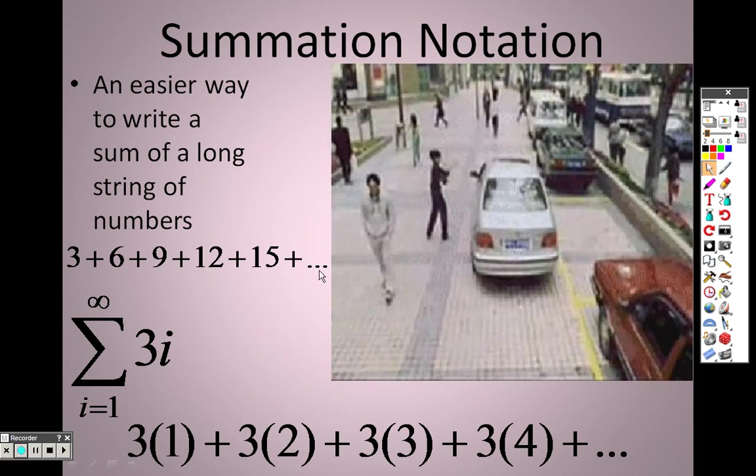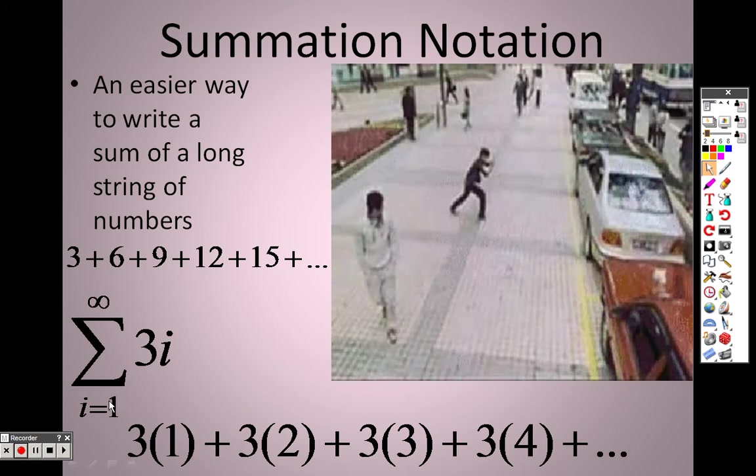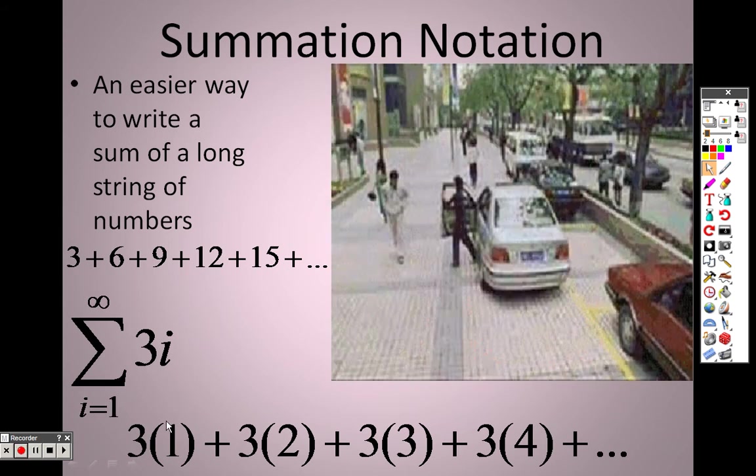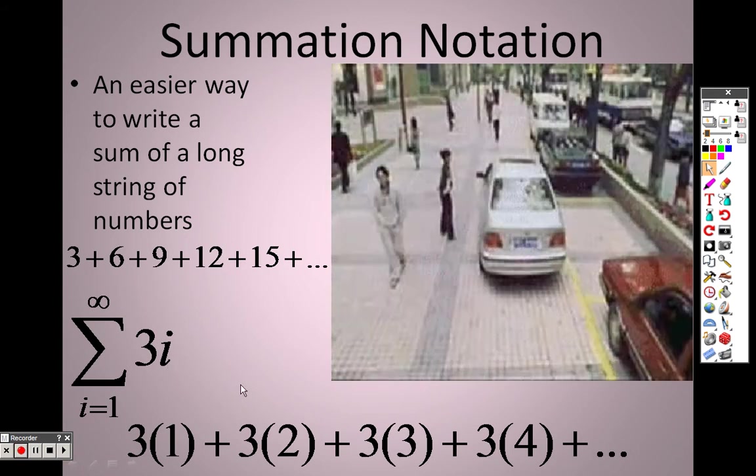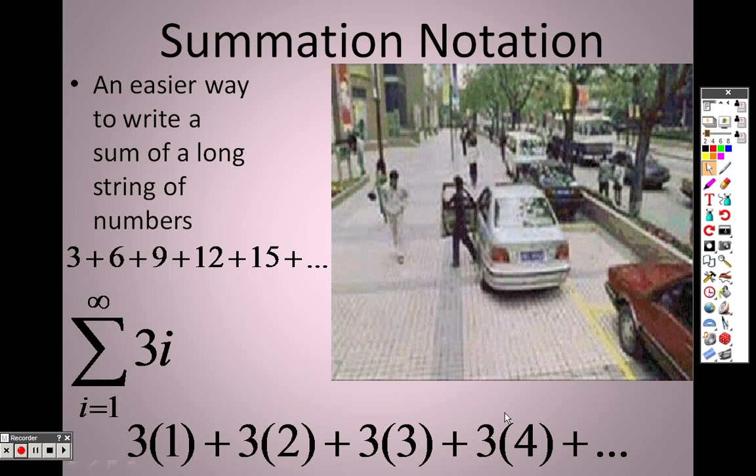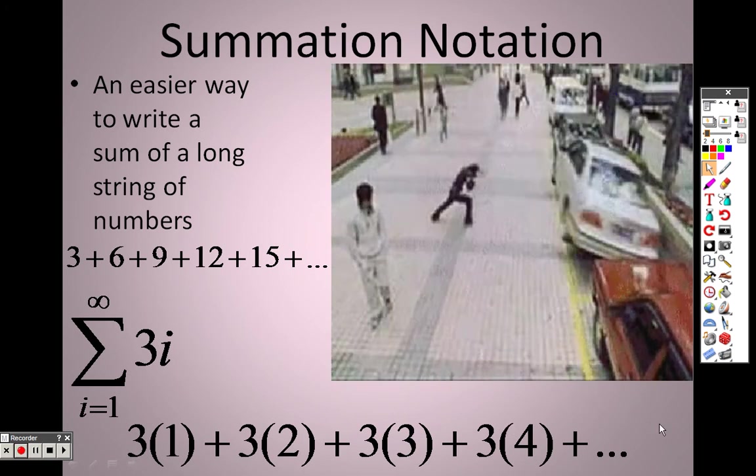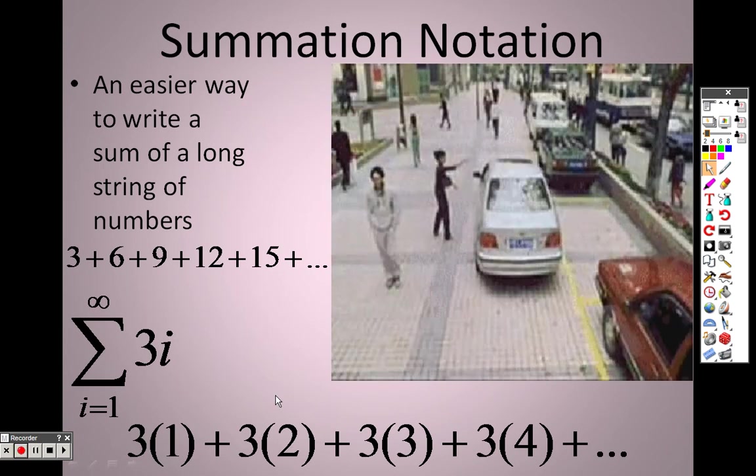And because this is dot, dot, dot, it goes on to infinity. So what this means is I would start with 1 and I plug a 1 in, so 3 times 1. Then I would start at 2, so it would be 3 times 2. Then I would go to 3, 3 times 3, and then 3 times 4, so it would be 3 times 5, 3 times 6, 3 times 7. And I would add them all together to get my answer.